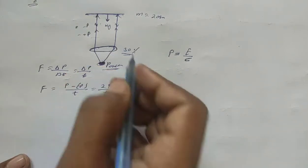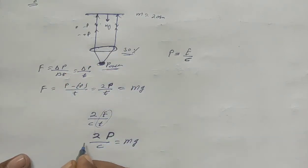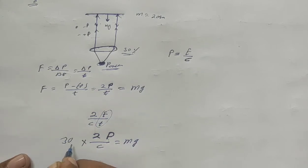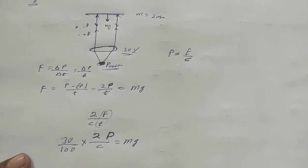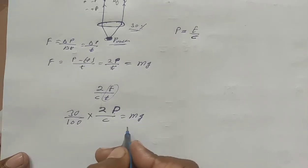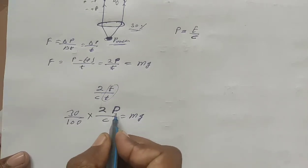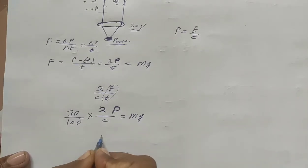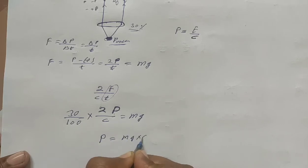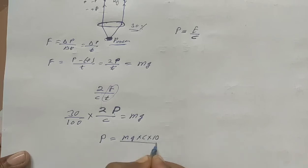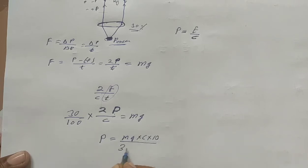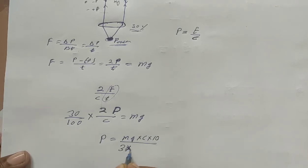Now, only 30% of the source power reaches the mirror through the lens. If I call this the source power, then the effective power is 30 percent, that is 30 by 100 of the source power. Setting the radiation force equal to Mg, this equation becomes: P_source equals Mg times c times 100 divided by 30 times 2.